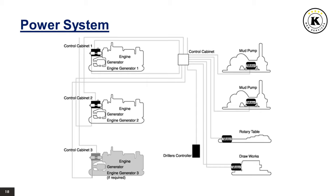Different types of prime movers or engines are available. Steam engines were the first engines used but have mainly been replaced by the following types. Both AC and DC electric motors are in use; DC type is most widely used today because it has a wide torque and speed range and is easily controlled. DC-powered rigs fall into two categories: one uses DC generators and the other uses AC generators along with silicon-controlled rectification to produce the required DC power.